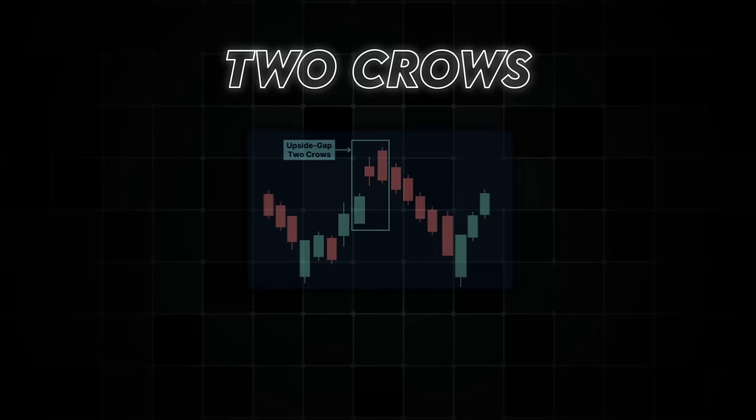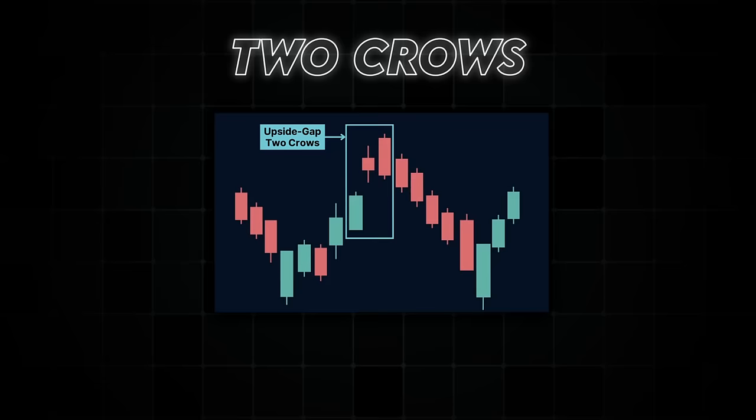Next we have the two crows — a bearish reversal pattern occurring in an uptrend. It consists of a long green candle followed by a similar red candle that opens within the body of the previous candle and closes lower. This pattern indicates a shift from buyers to sellers.